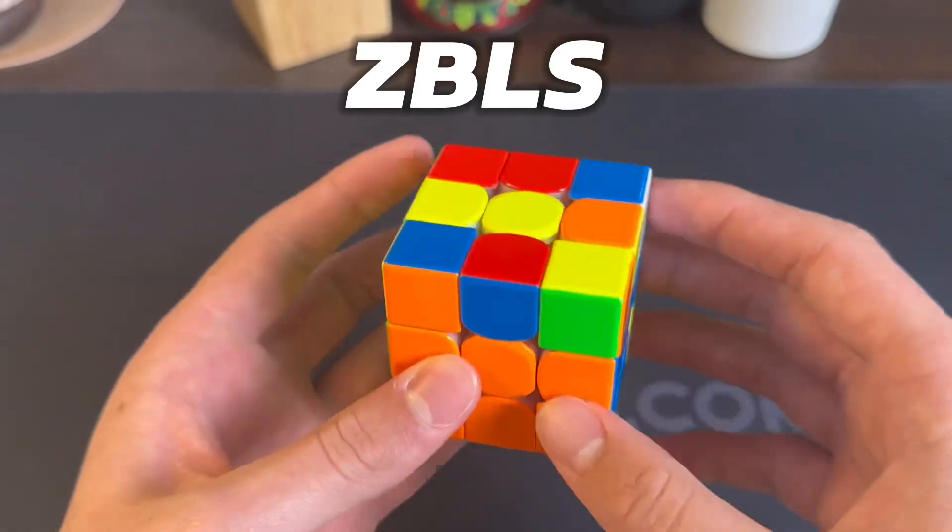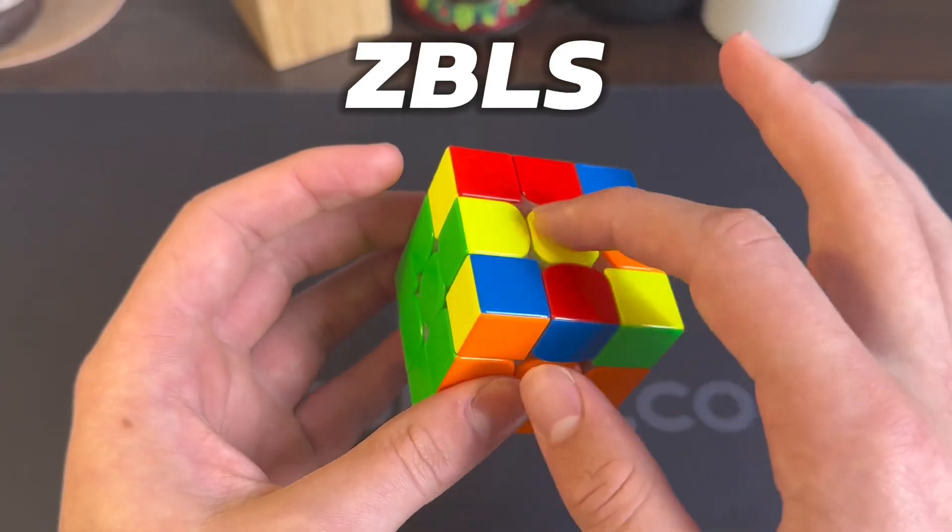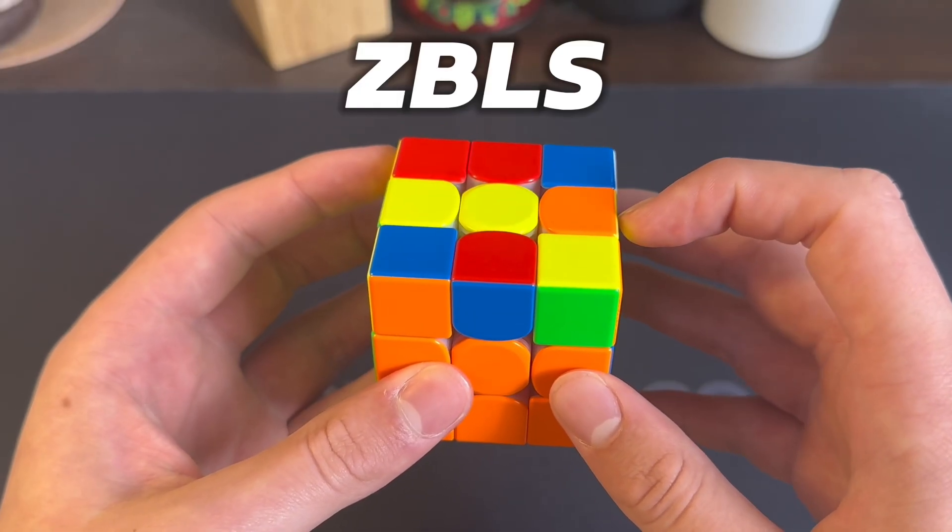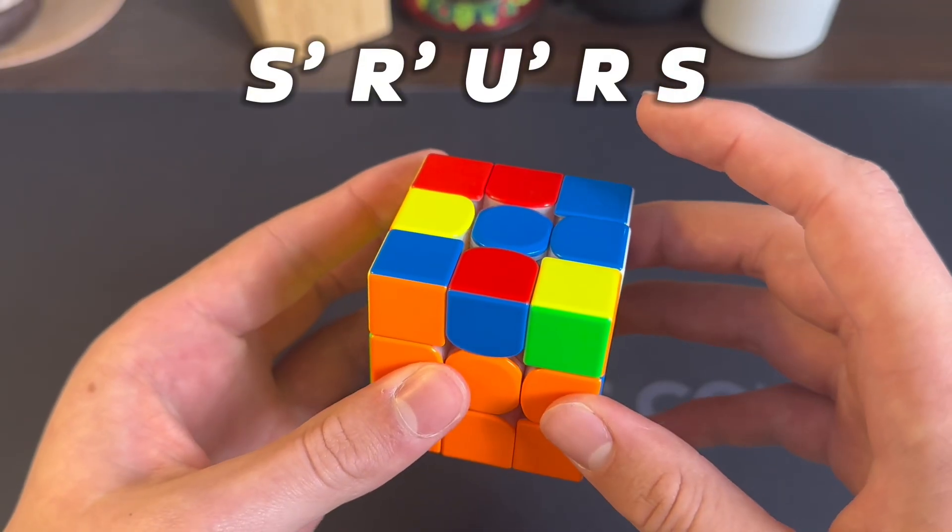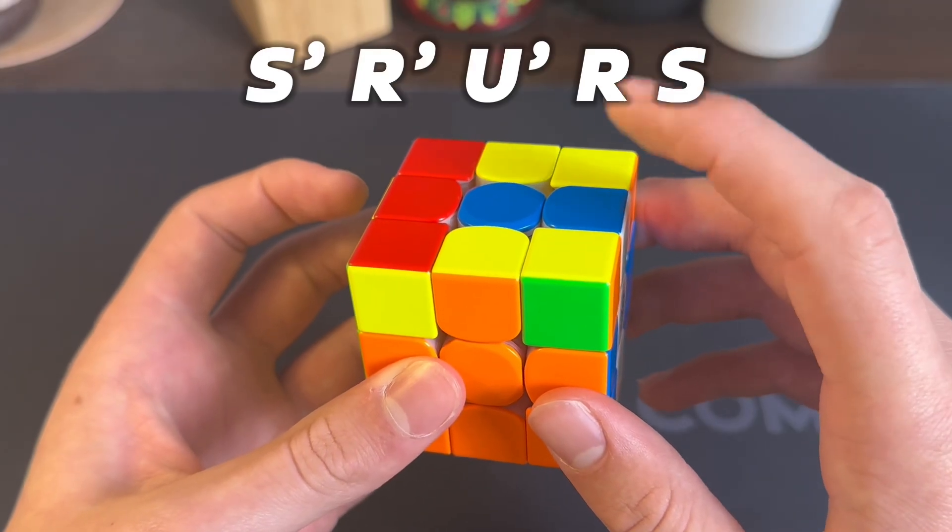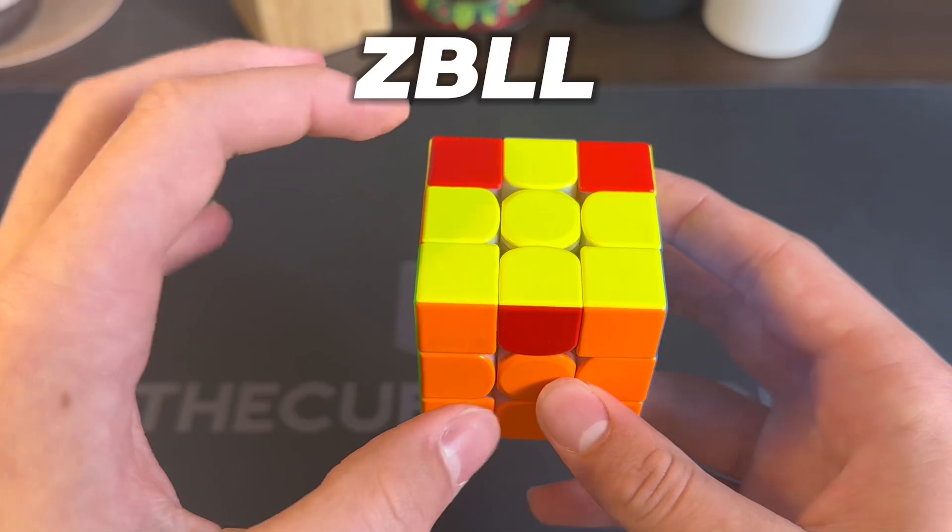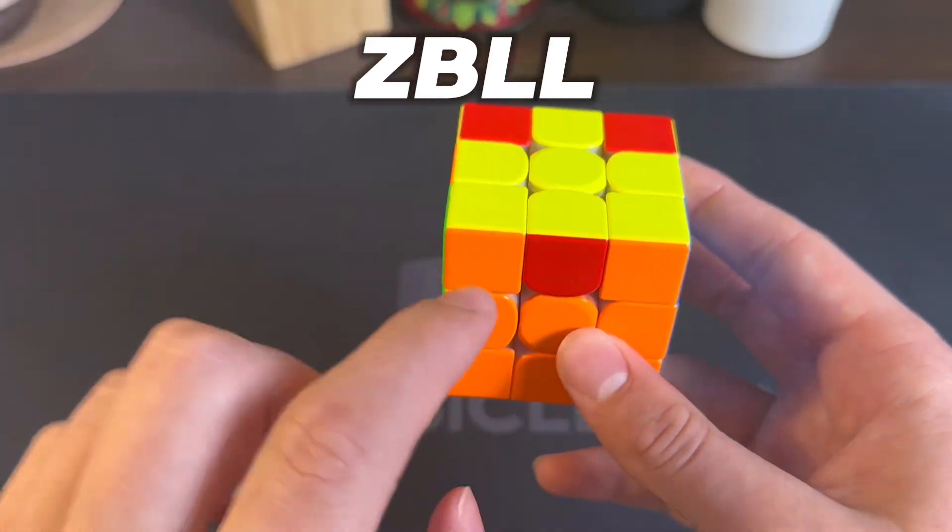For this one you have a line right here, and how you solve this one is you just do an S prime like that, insert the free pair, and then do S back. And that gives a ZBL. For this T case, you have these two are matching and these two are matching, and you got a block and you got opposites right here.